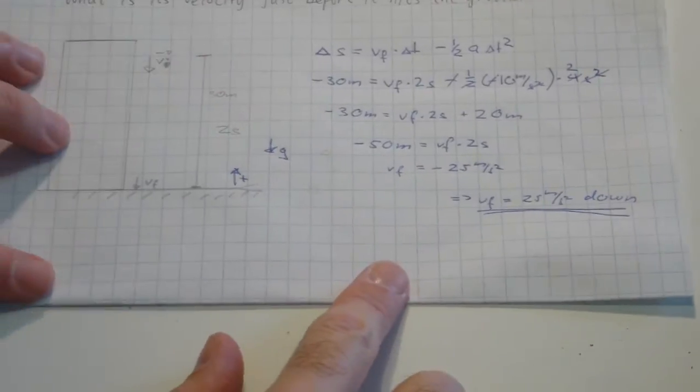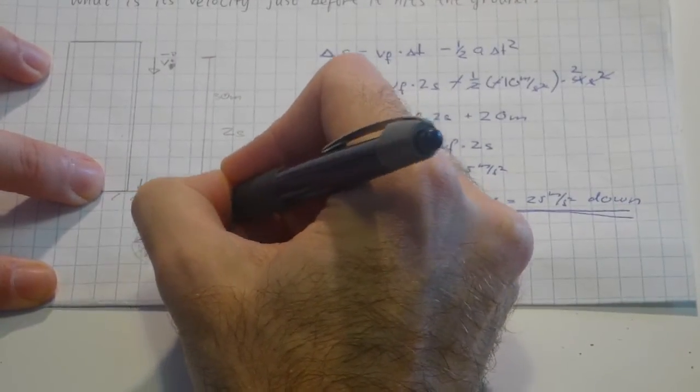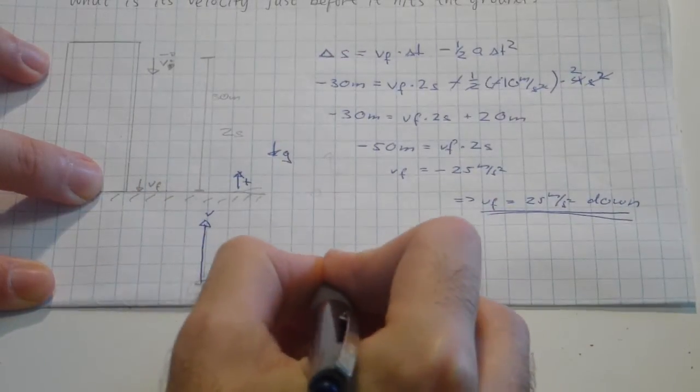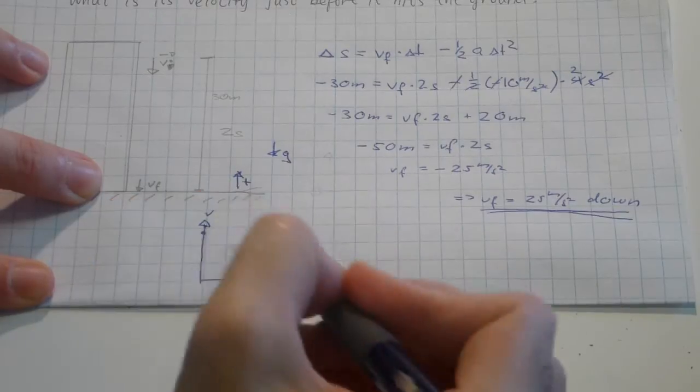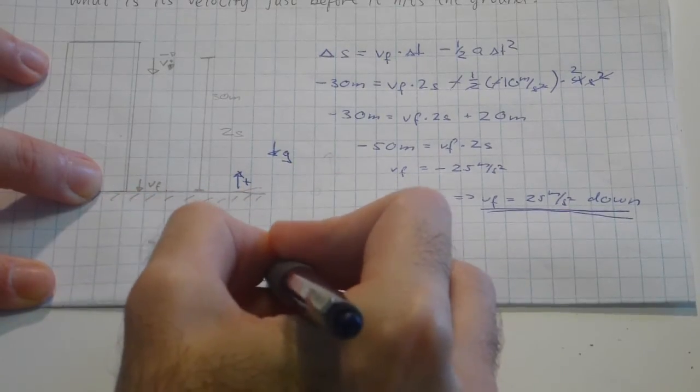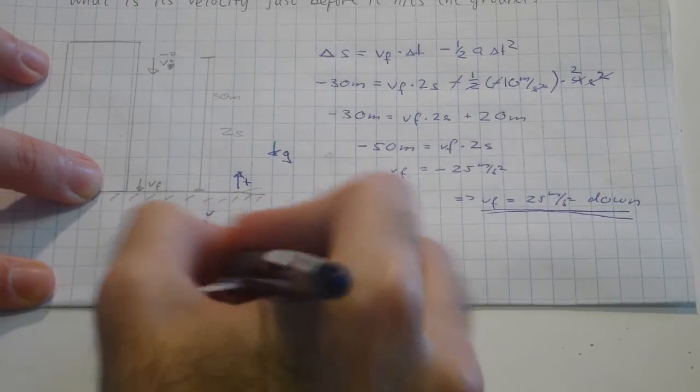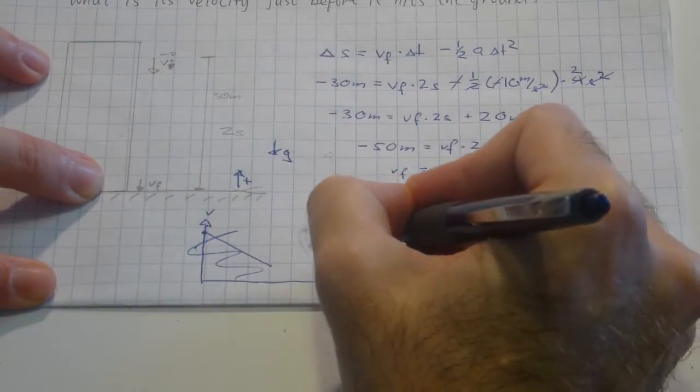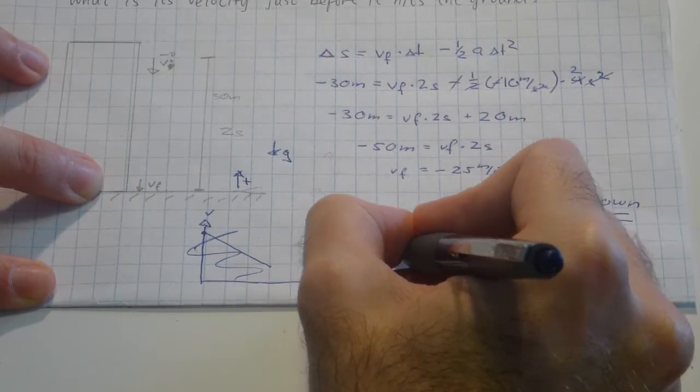Now, the second way of doing it: we can look at the v-t graph. We'll just draw a little sketch of it. We actually don't know the initial velocity, and we also don't know the final velocity. Probably has some initial velocity, some final velocity.